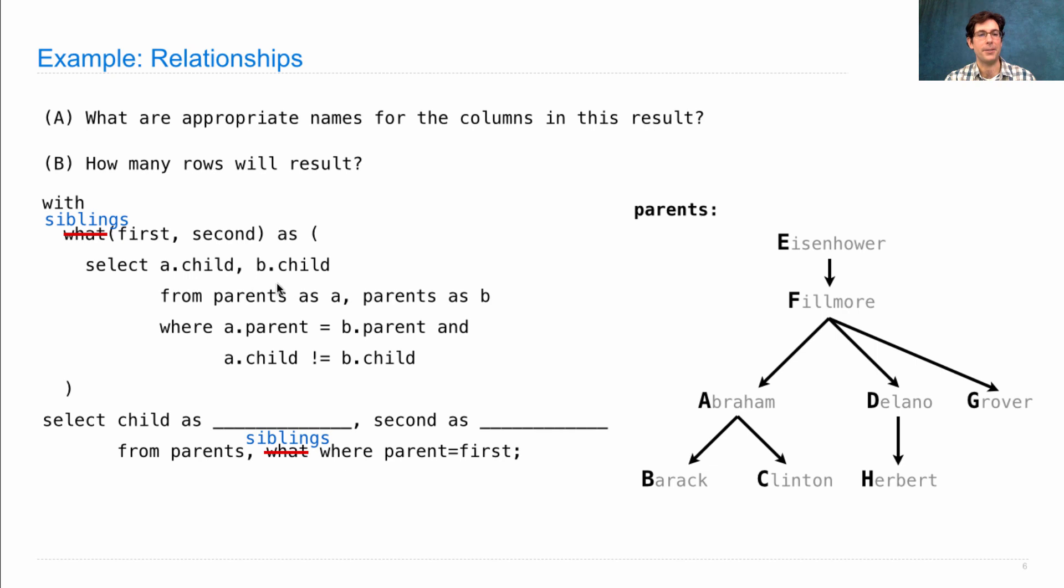Next, we can look at the kinds of rows that come out when you join parents and siblings together. Well, you have the parent column, the child column. Those two come from the parents table. You have the first and the second column. Those two come from this local siblings table. And then we're selecting from that only the child and the second column. So we keep child Barack and second as Delano, which is that relationship.